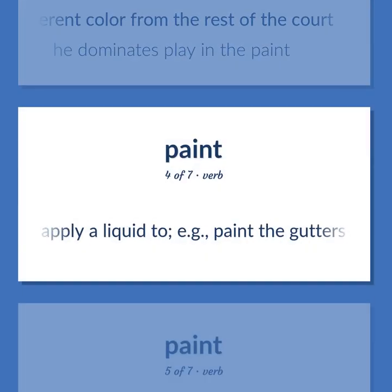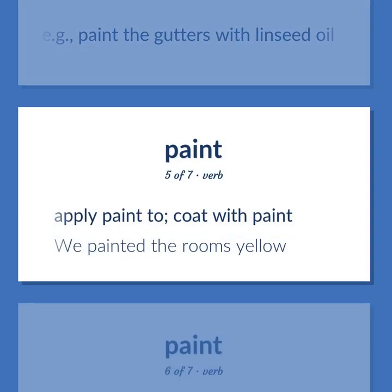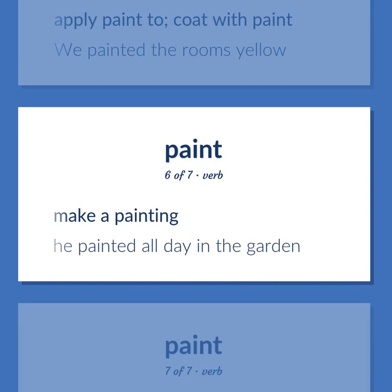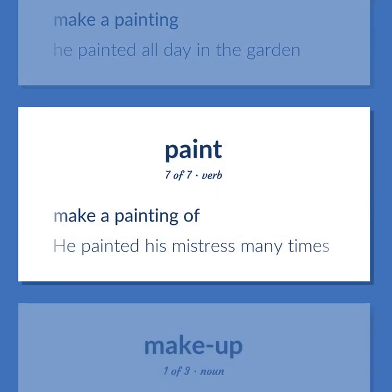Paint as a verb: to apply a liquid — e.g., paint the gutters with linseed oil. To apply paint or coat with paint — we painted the rooms yellow. To make a painting — he painted all day in the garden. To make a painting of — he painted his mistress many times.